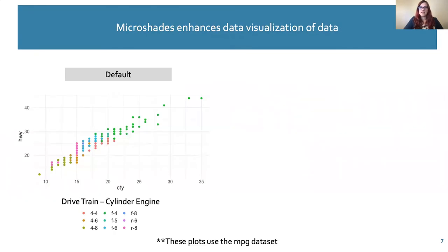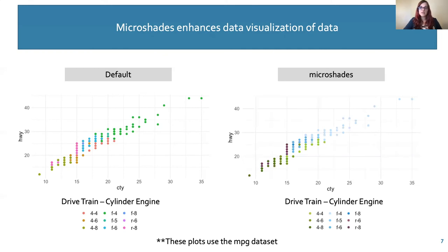Microshades palettes can easily be accessed with our package and applied to any data plot. In this example, we're using the MPG dataset available in R. This plot examines cars' fuel efficiency in terms of miles per gallon. The points represent a car with a particular type of drivetrain and cylinder engine. This first plot uses default coloring available in ggplot and provides no meaningful order to the coloring. This next plot uses the Microshades color and organization, where each drivetrain is a different color and the number of cylinder engines is represented by a shade of that parent color.